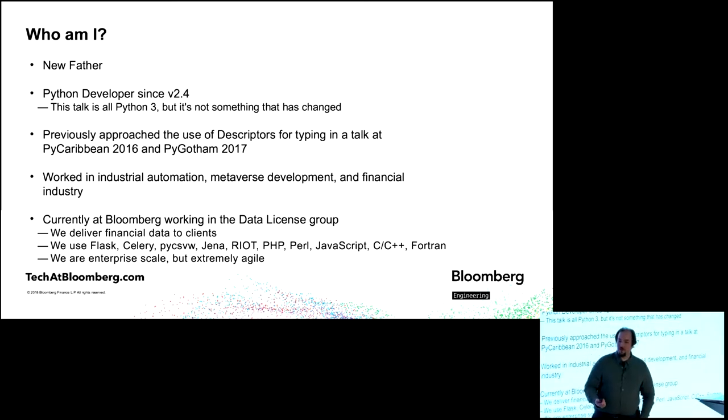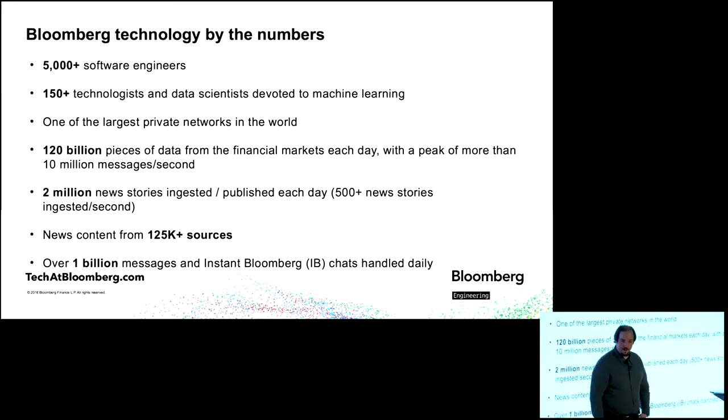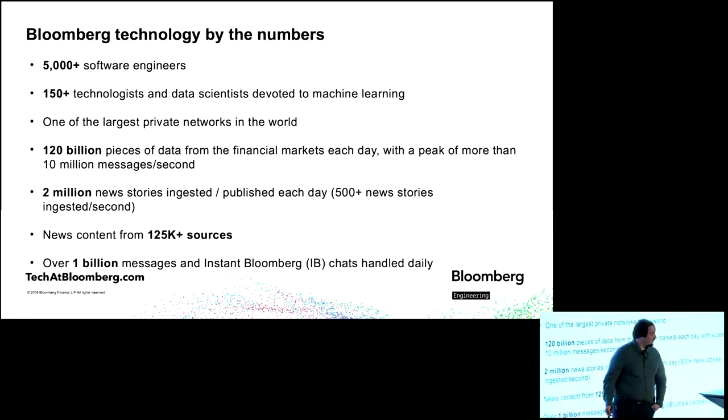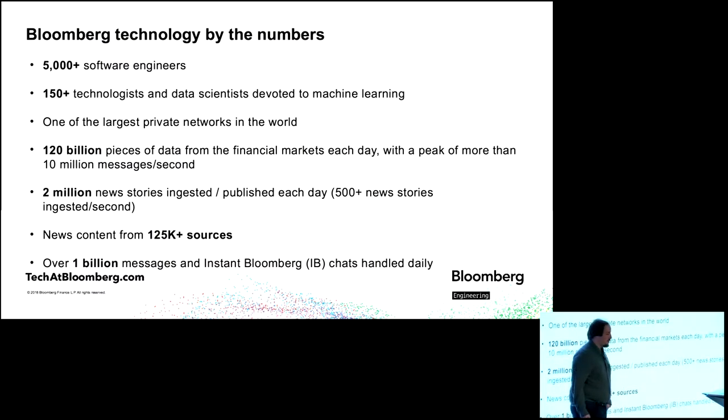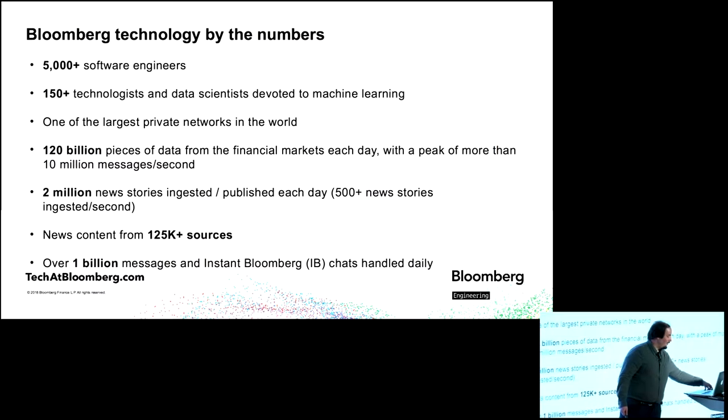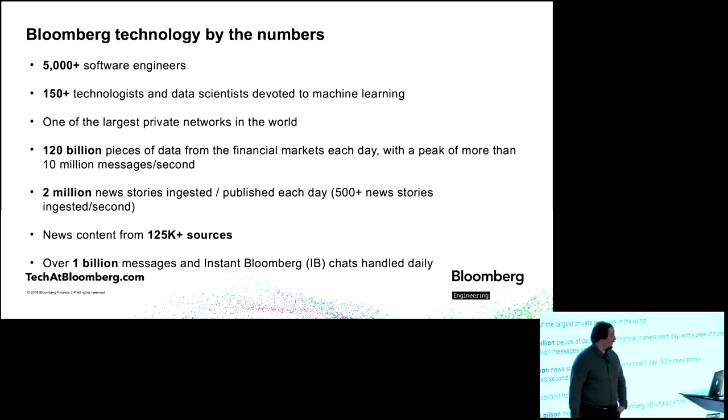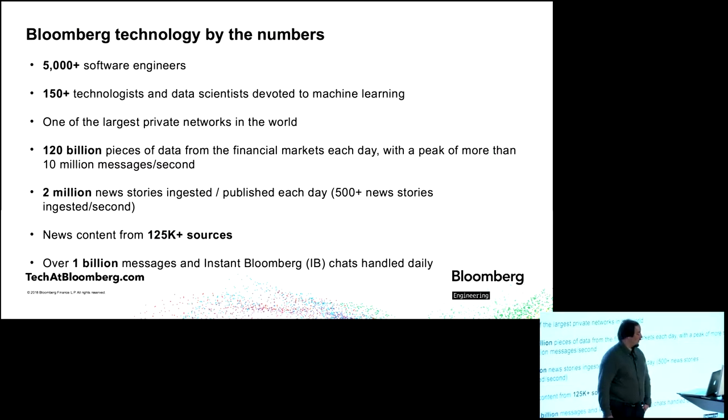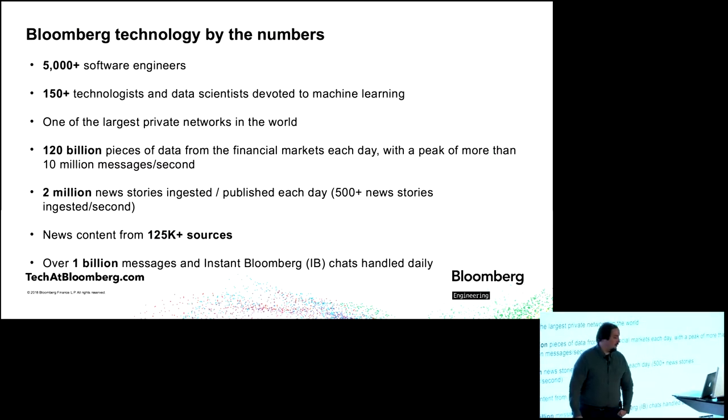That's typical of Bloomberg as a whole. We are enterprise scale, but we are extremely agile. Marketing gave me this slide, but it actually is kind of interesting. 5,000 developers, 150 of them, for example, in machine learning. One of the largest private networks in the world. There's about 120 billion pieces of data going through our system, peaking at about 10 million per second. Two million of them, as much as 500 per second, are news stories being digested, analyzed, and distributed from 125,000 sources.